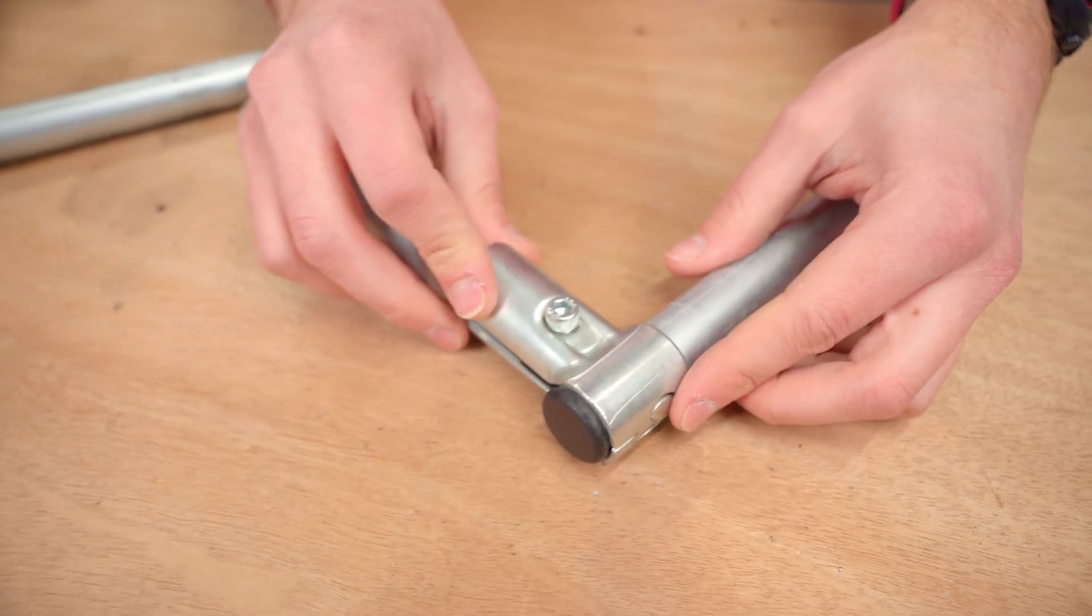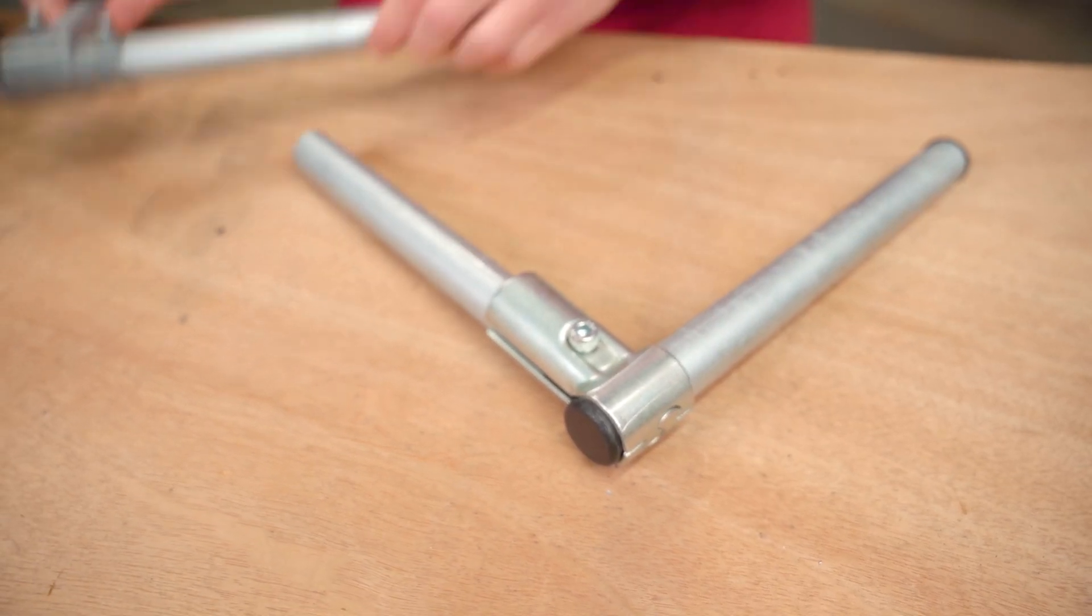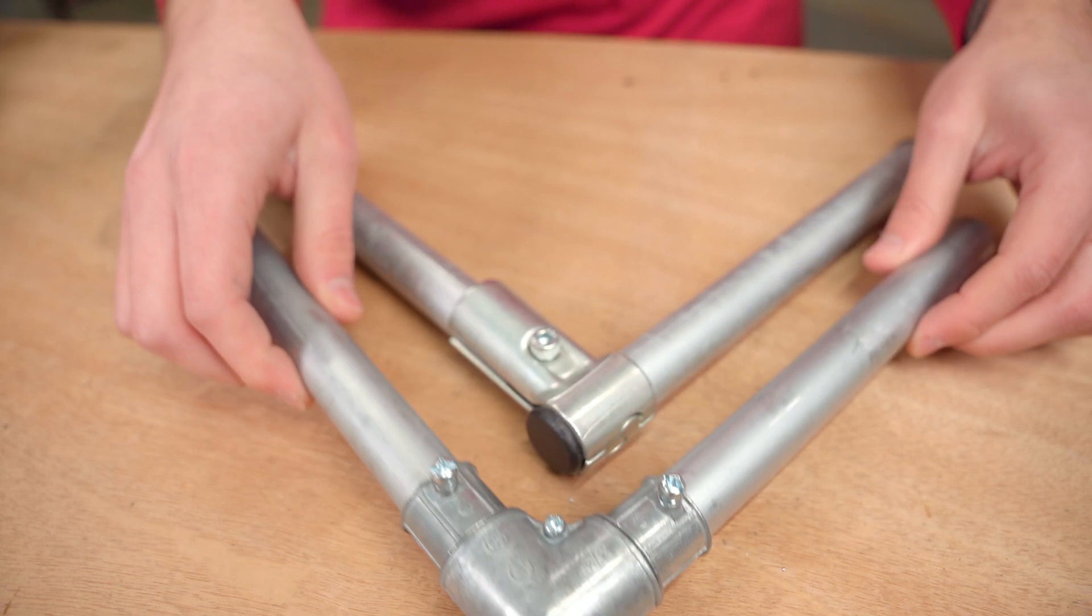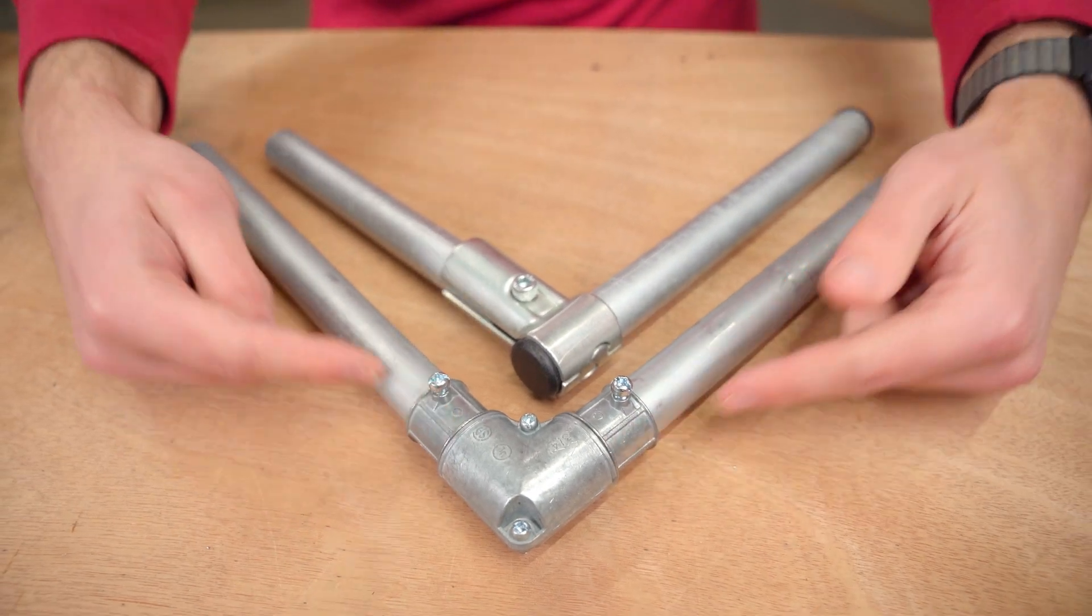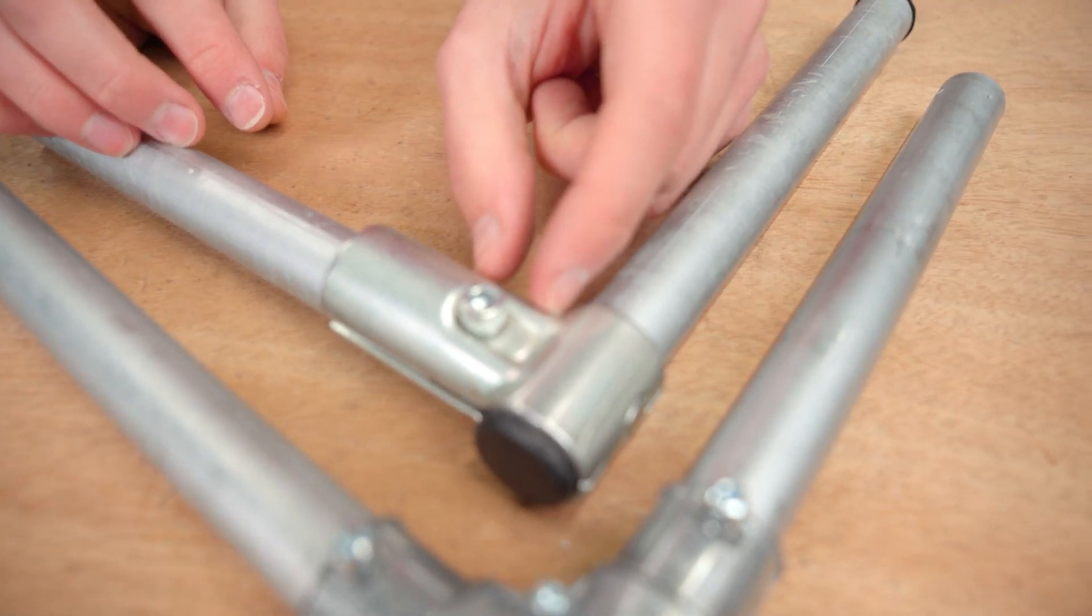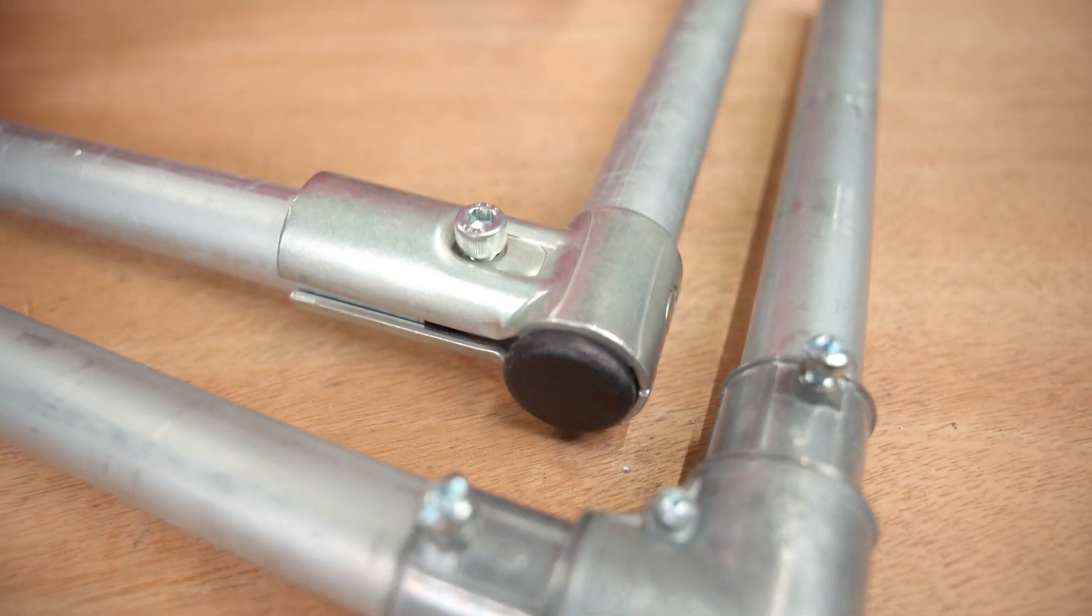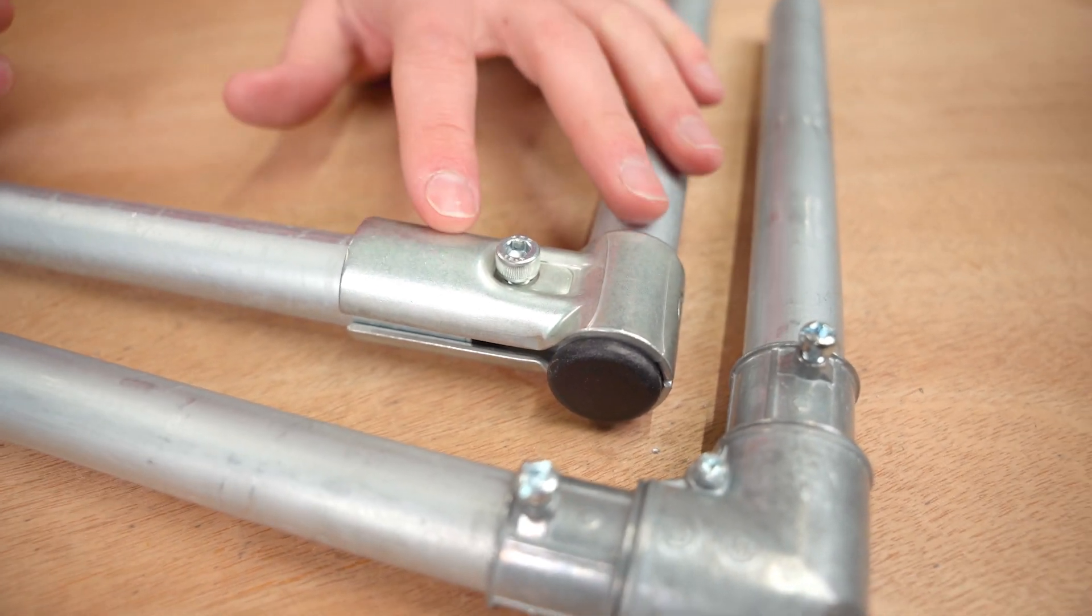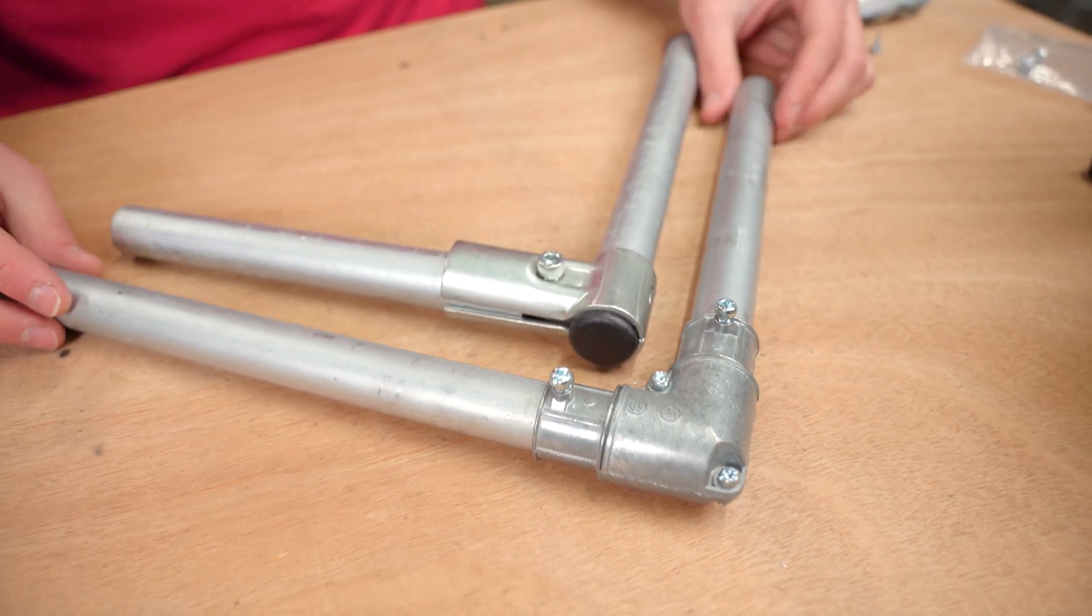But essentially you can make a 90 degree elbow in the same way that you would use this one. It's just slightly different because this allows you to have even pieces of conduit coming out of it, and this is just slightly offset because of the clamp style and the friction-based connection. That's really the only difference, and this is going to be much stronger of a solution because we designed these for building with EMT conduit.